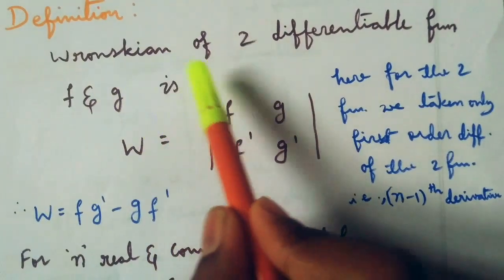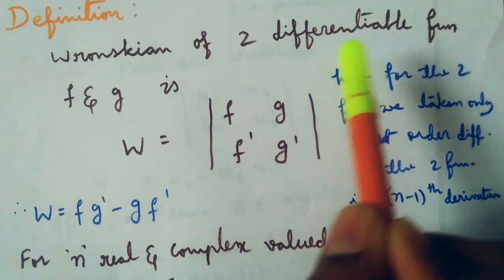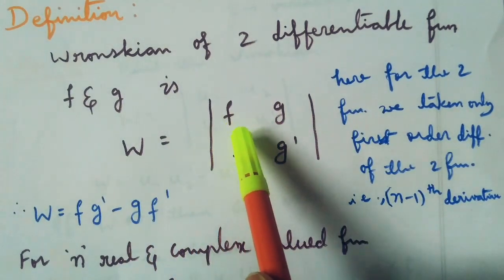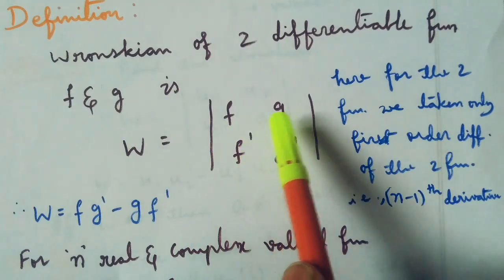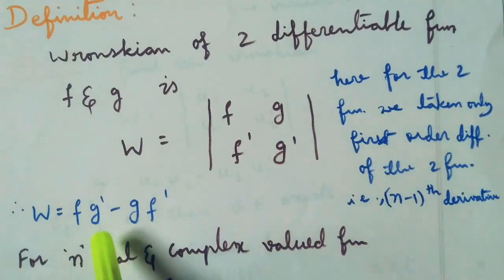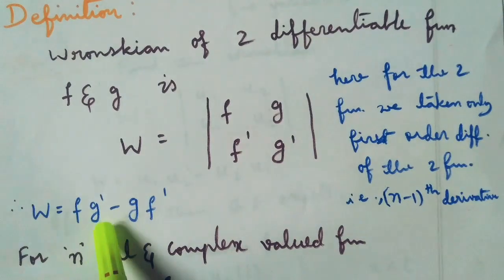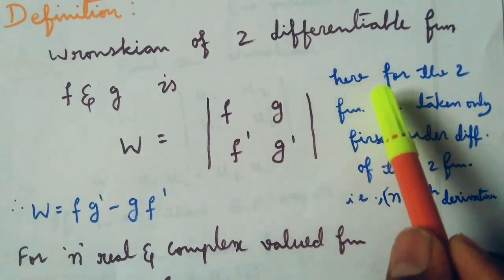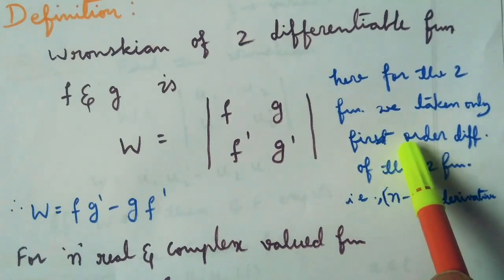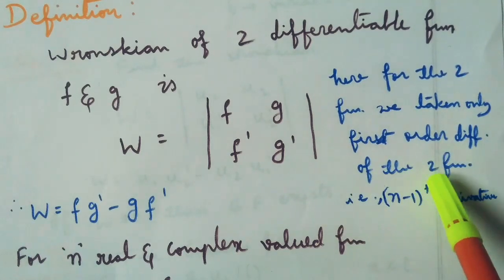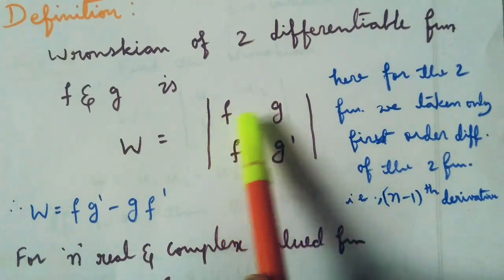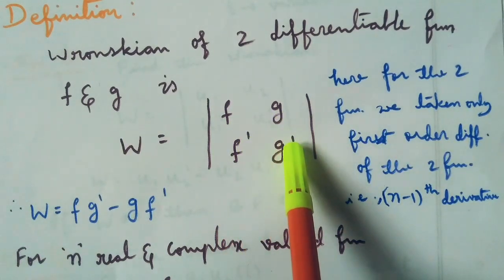Definition: The Wronskian of two functions f and g is W equal to the determinant of f, g and f dash, g dash. That is, W is equal to f·g dash minus g·f dash. For two functions, we take only first order differentiation of the two functions, that is f, g and f dash, g dash only.